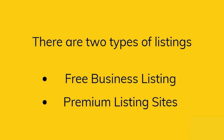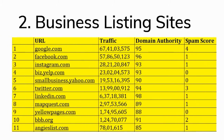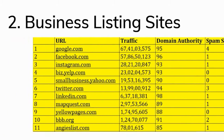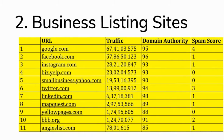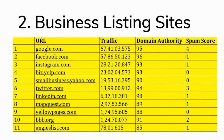There are two types of listings. First is free business listing and second is premium business listing sites. We will cover free business listing sites because this is very easy and convenient to all business owners. Premium listing sites take a lot of money but you can try them also. If you are a small startup, you can try free business listing — even if you are the owner of a big business, you can try them.